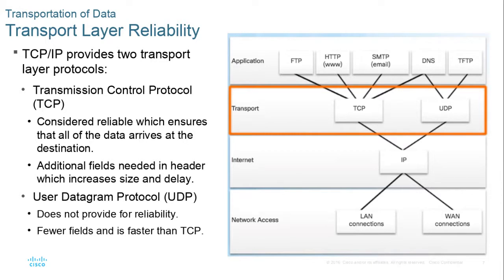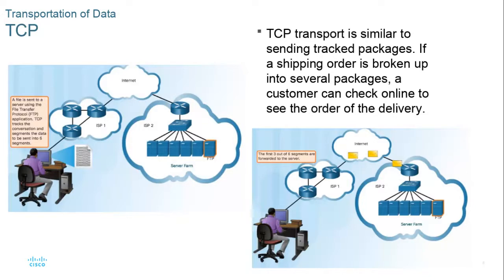UDP is also used for TFTP when backing up a startup configuration file from a device. TCP is like sending a FedEx package that was too big for one box — FedEx tracks all the pieces so you can verify delivery and reassemble them. In the graphic, data has been sent in six segments and as it goes from one ISP to another it is reassembled on the server into one cohesive chunk, an exact copy of the original.